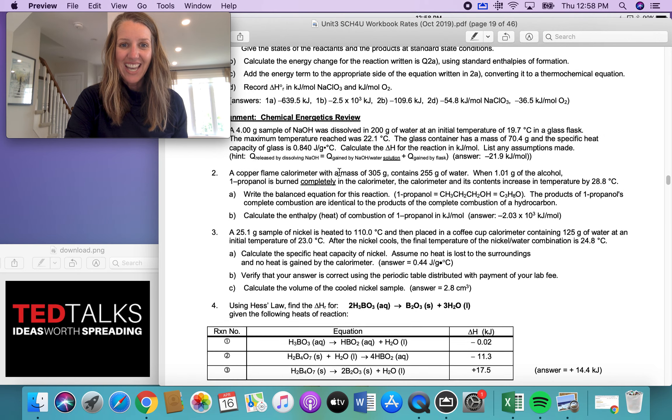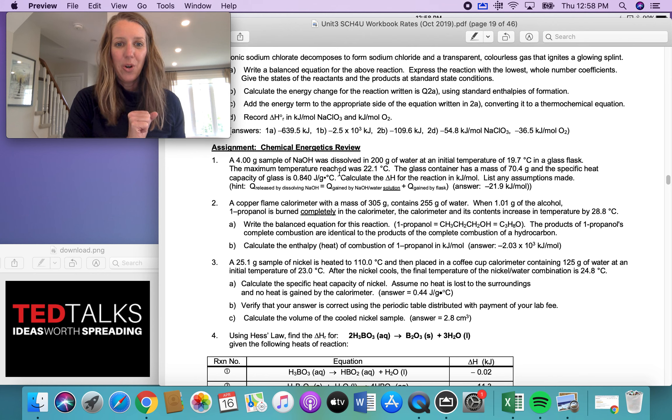All right so the first question that we're looking at here is question number one. If a four gram sample of sodium hydroxide is dissolved in 200 grams of water, temperature of the flask it's in a glass flask so you're also going to be given the specific heat capacity of glass. You know what the specific heat capacity is of water and just like in the Hess's law lab what you're going to do is you're going to just assume that the specific heat capacity of that solution with the water and the sodium hydroxide is pretty much the same as it is for water.